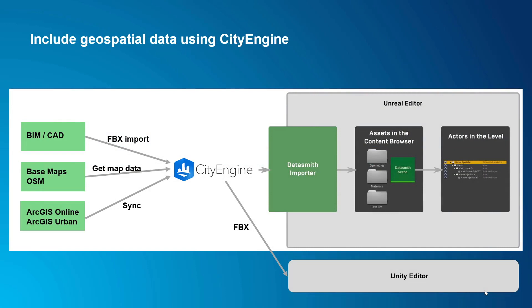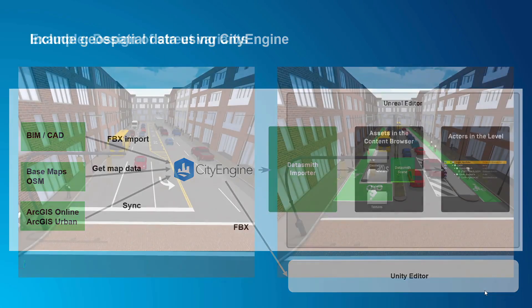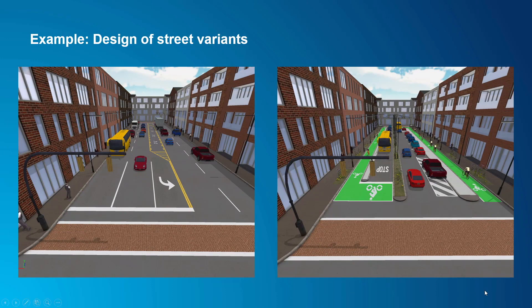How does this work together with CityEngine? CityEngine sits in the center for consolidating various external data sources. We can have FBX imports, import map data, sync from ArcGIS Online or ArcGIS Urban, get all this into a CityEngine model, and then export using FBX or the Datasmith format to bring it into Unreal Engine or Unity.